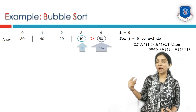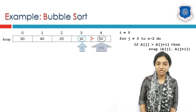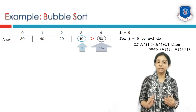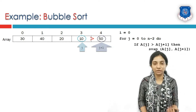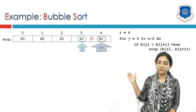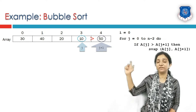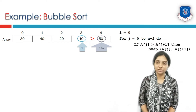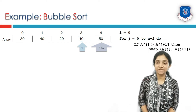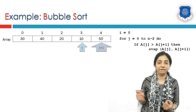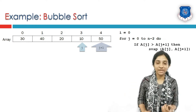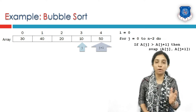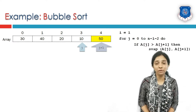Now if we increment j at this moment, j+1 would point to an element not part of the array list. For 5 elements, j has reached 3, that is for n elements it must go up to n minus 2. After this moment, 50 is the greatest element among all elements of the array, placed at the highest index. So 50 is now sorted.